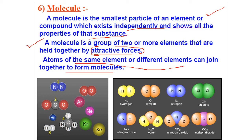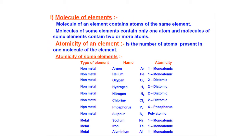For example, two atoms of nitrogen will form N2; the same way two oxygen atoms form O2; then two oxygen and one carbon form CO2. This is how molecules are formed by the combination of elements or atoms.